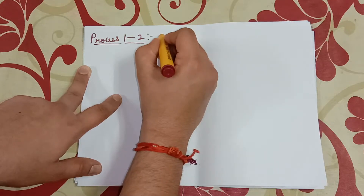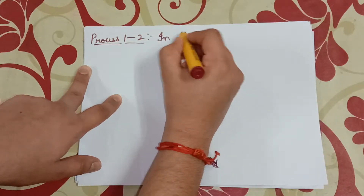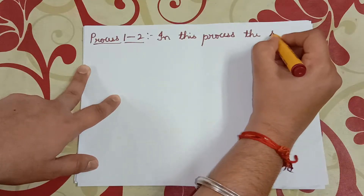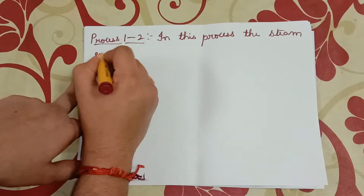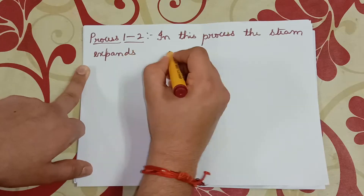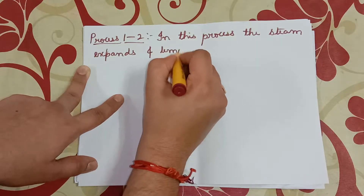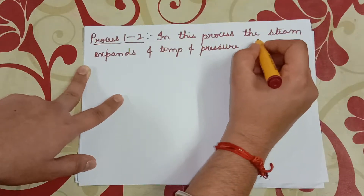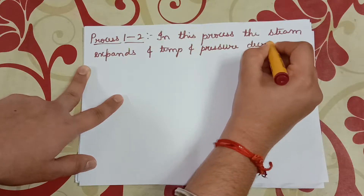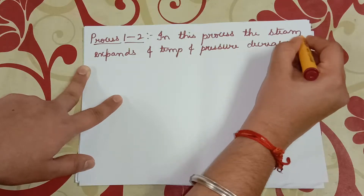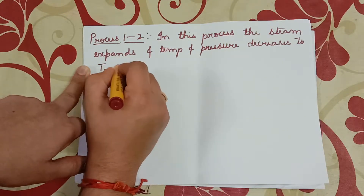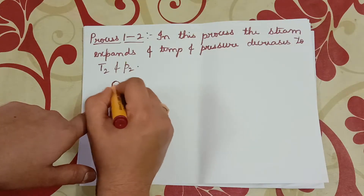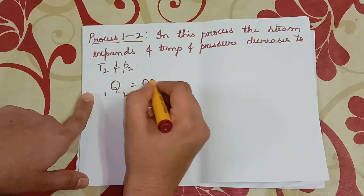Process 1 to 2. In this process, the steam expands and temperature decreases to T2. This is an isentropic process, that is Q12 is equal to 0.